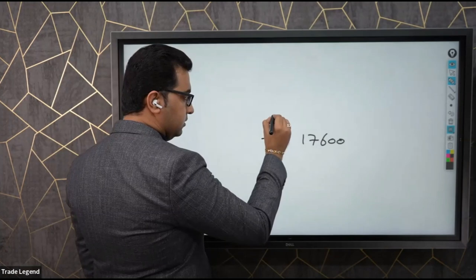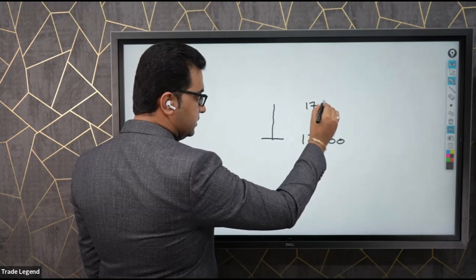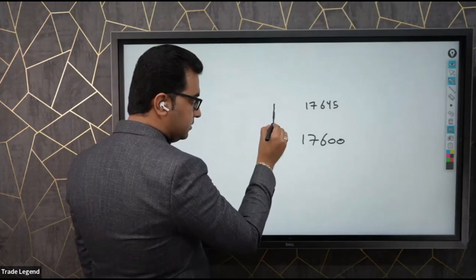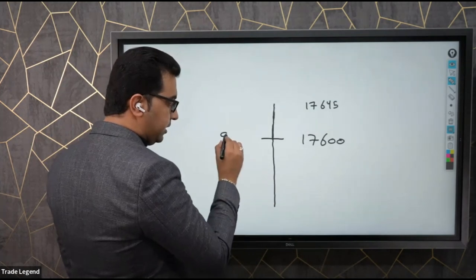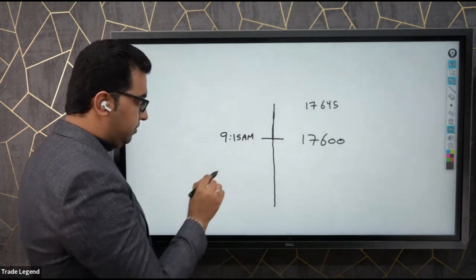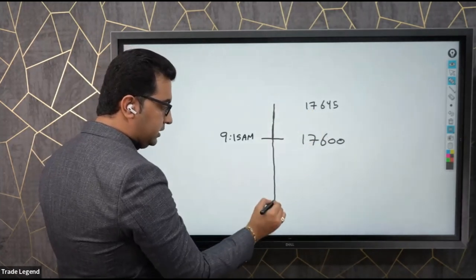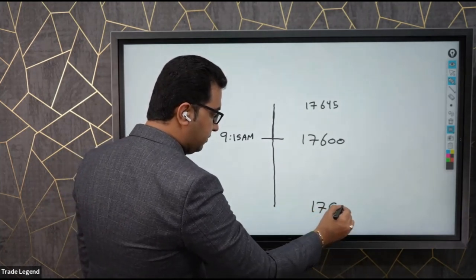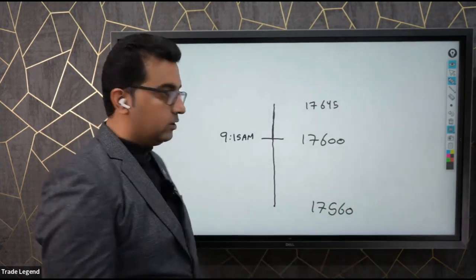The price will open here. Let's say it opens at 17,645 — that will be the highest. Then the lowest price here will be 17,560.